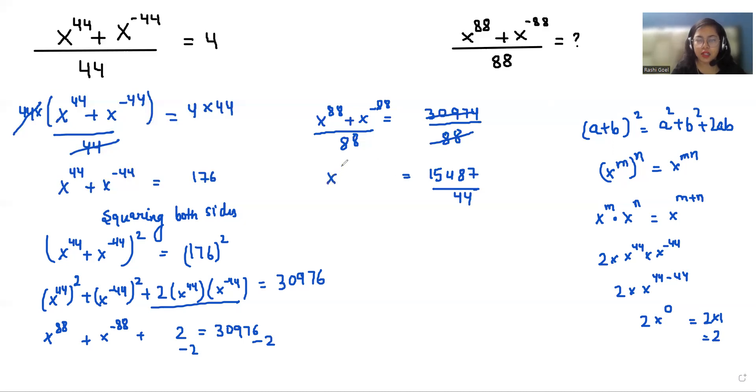So our final answer is 15487 divided by 44. I hope it's clear and easy to solve. If you find it useful, please give a thumbs up and share with your family and friends. Thank you.